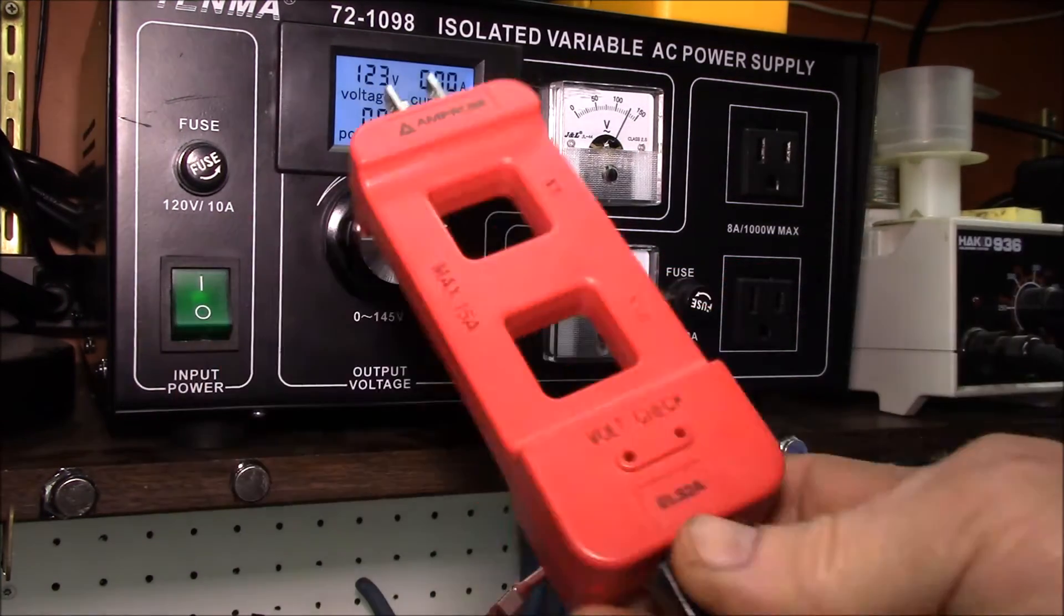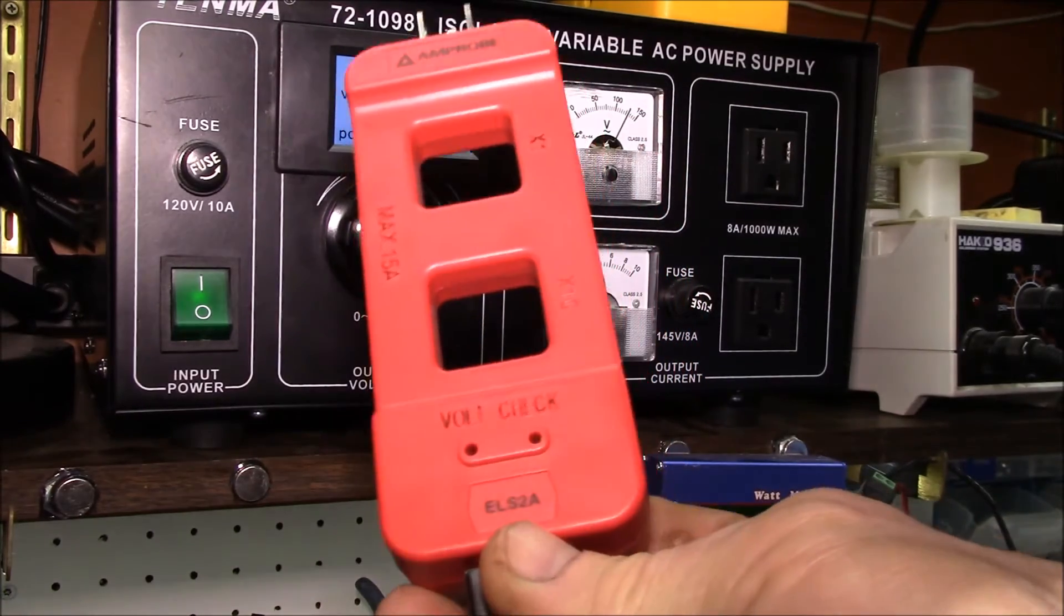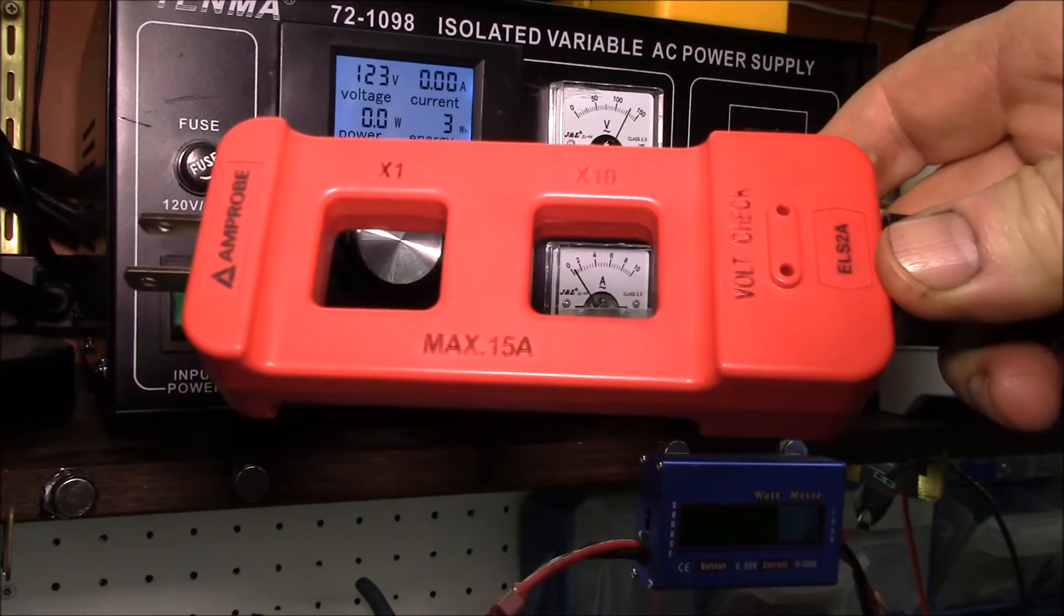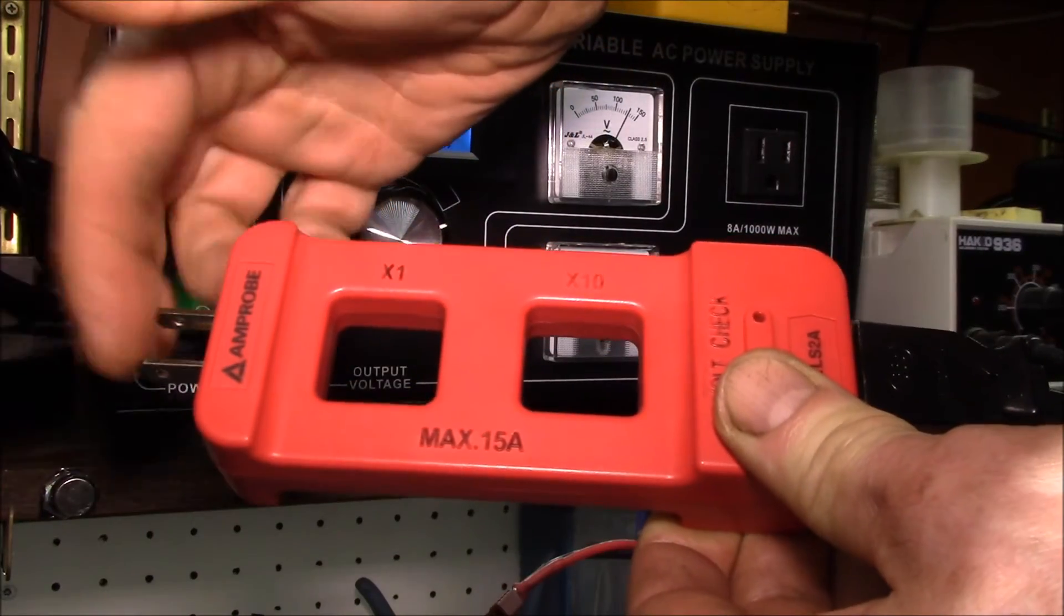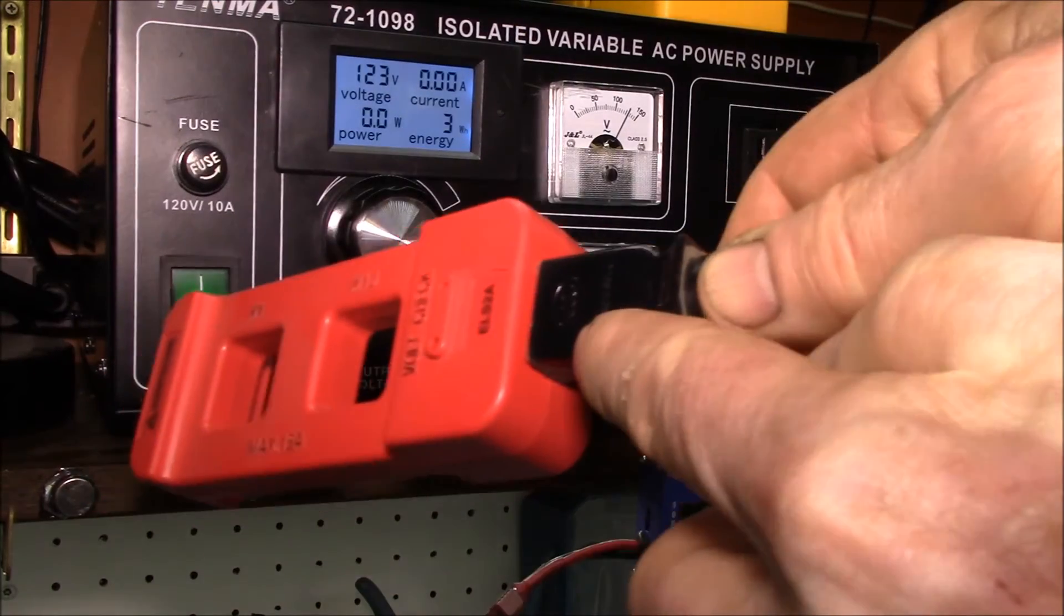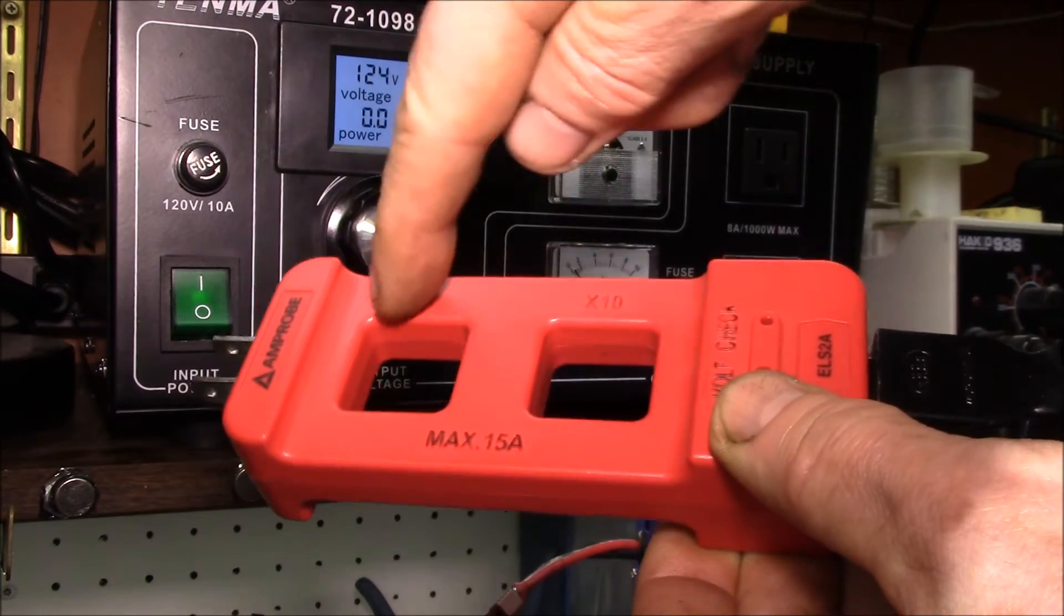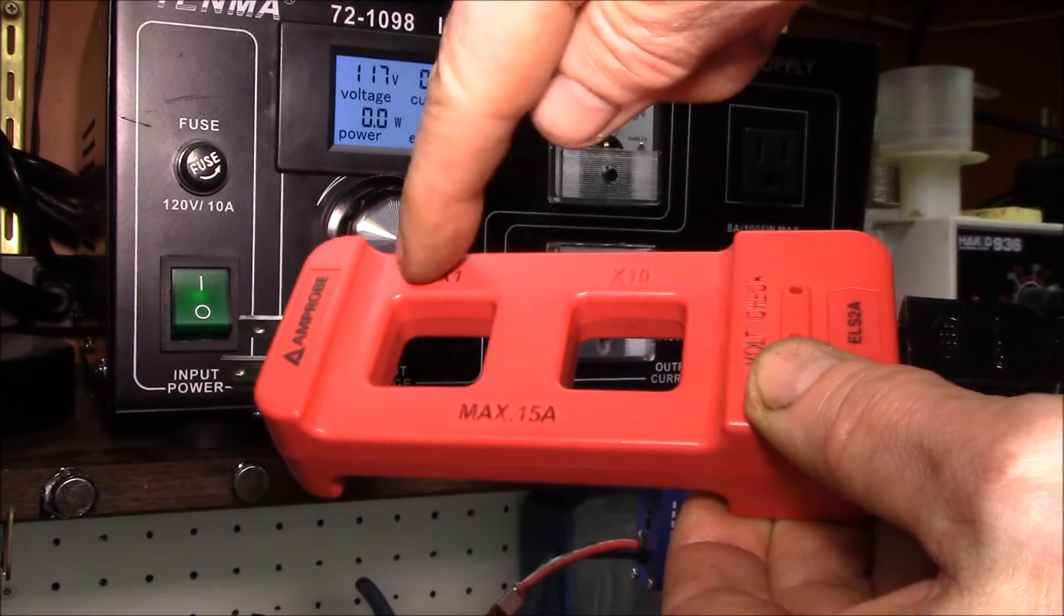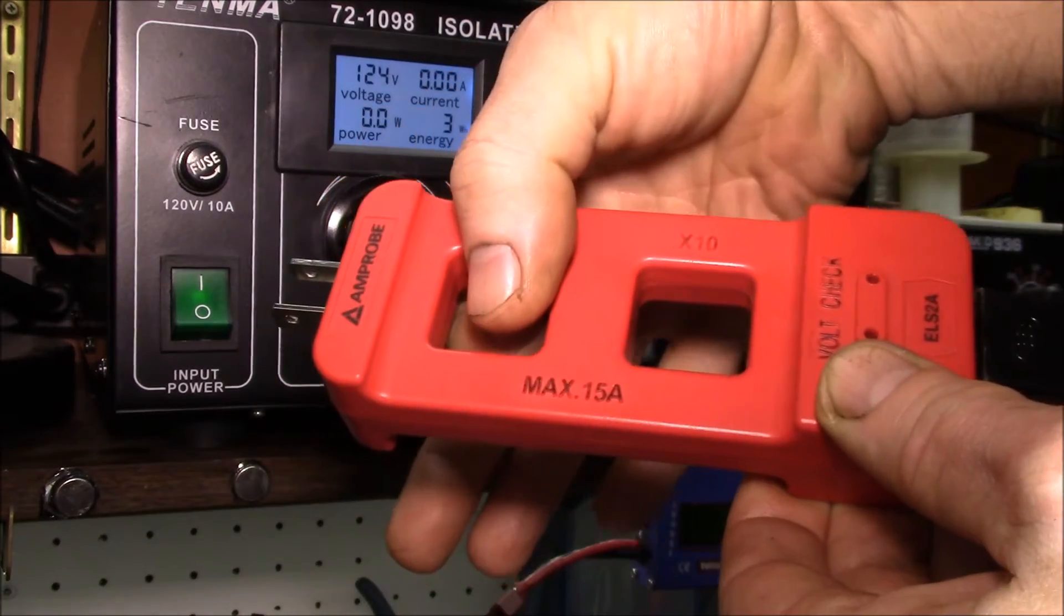What I have is an Amprobe ELS2A clamp meter accessory. It's a pretty handy little gadget - it's got a power plug on this end and a receptacle on that end. It brings the line conductor through here in this x1 loop.